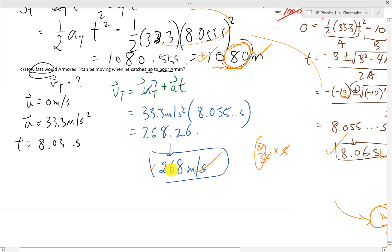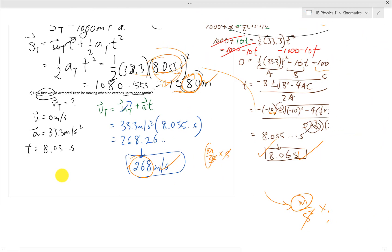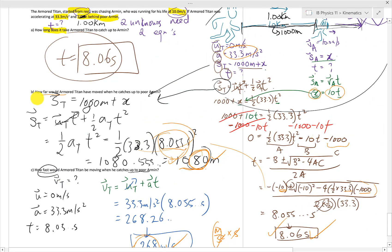I would imagine the Titan would be running pretty quickly near the very end. So I would say this does make some sense, I would say. Because 8 seconds is not a lot of time to cover 1,000 meters, if not a little bit more than that. So we have done all our checks for our problems. Here is the challenge problem.